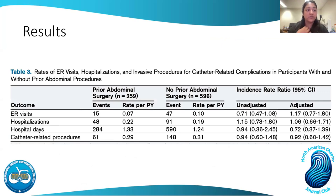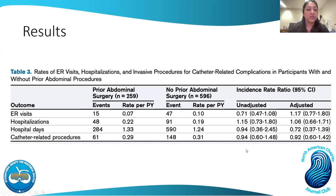Supplementary analyses showed no significant difference when repeated for infectious versus non-infectious outcomes, or by method of surgical insertion. Supplementary tables three and four also conclude that even when the number of prior abdominal surgeries increased, there was no statistically significant increase in risk compared to those with no history. Table three shows secondary outcome results for ER visits, hospitalizations, hospital days, and catheter-related procedures — adjusted and non-adjusted incident rate ratios were non-significant across all confidence intervals. Overall, prior abdominal procedure was not significantly associated with any increased risk of PD catheter-related procedures, ER visits, or hospitalizations.